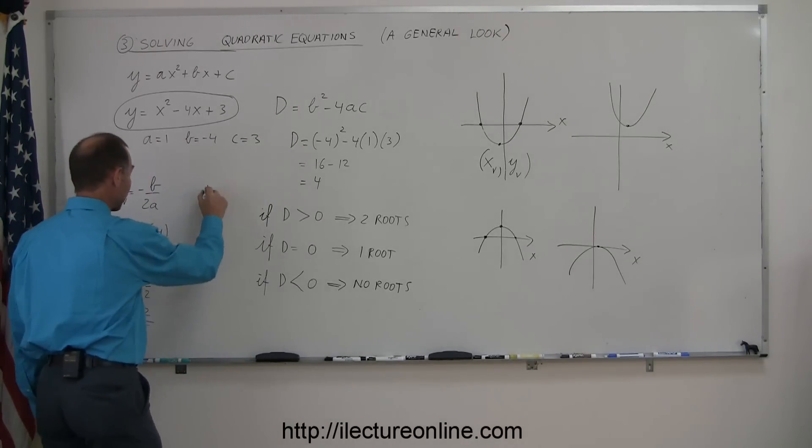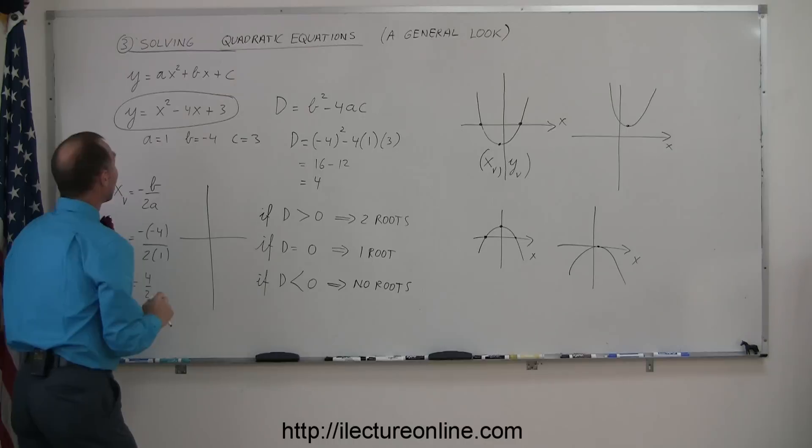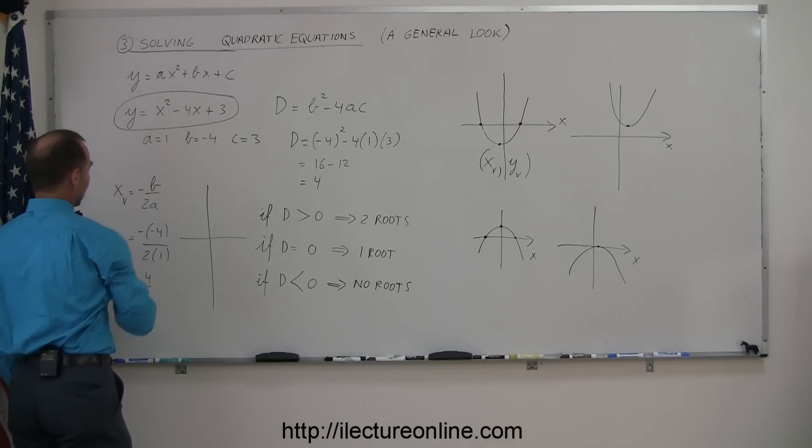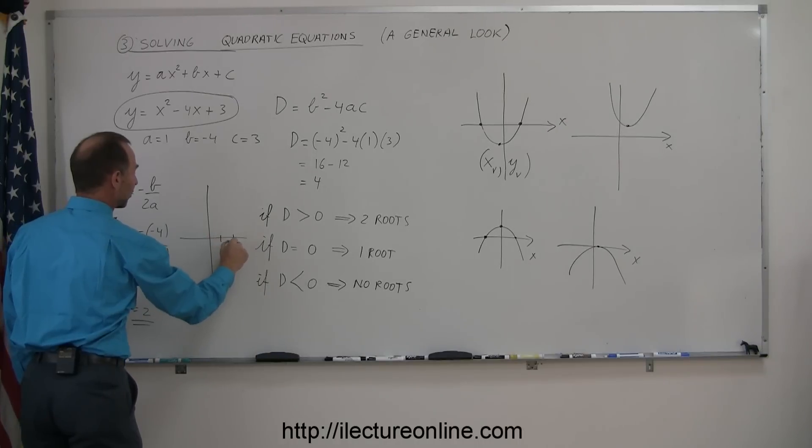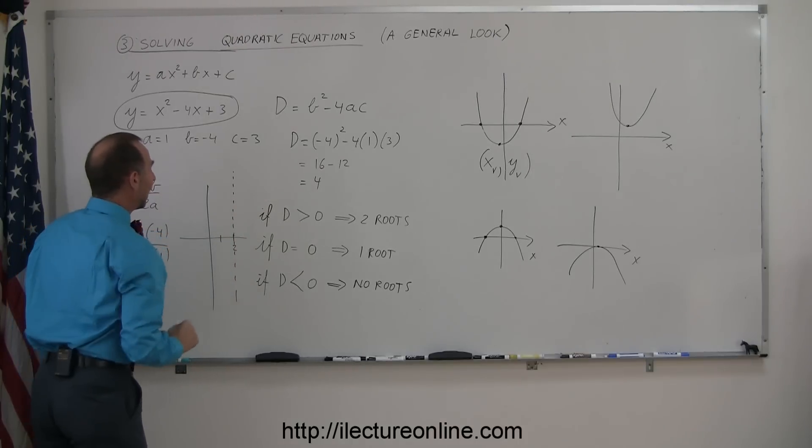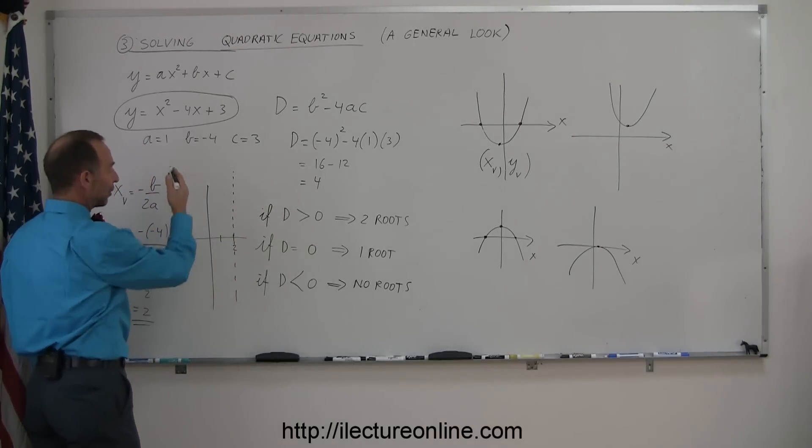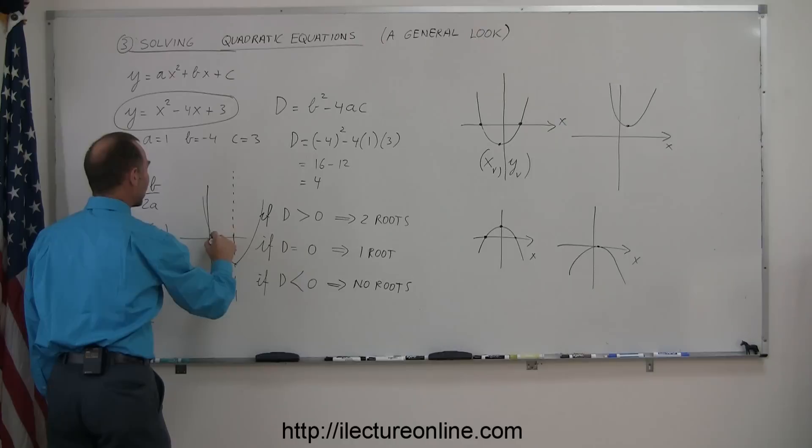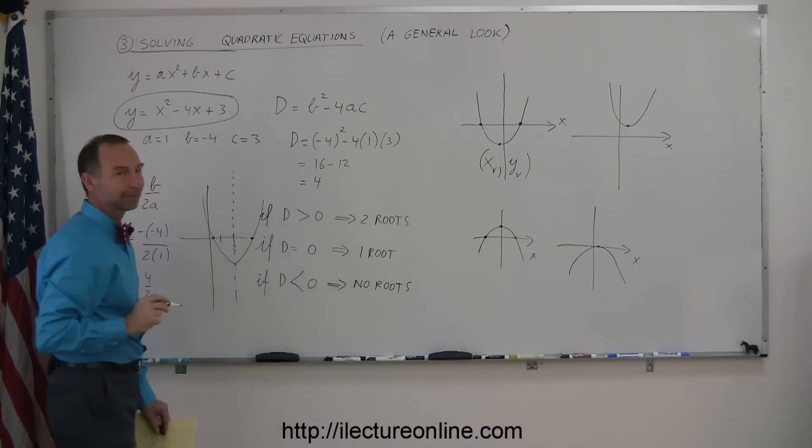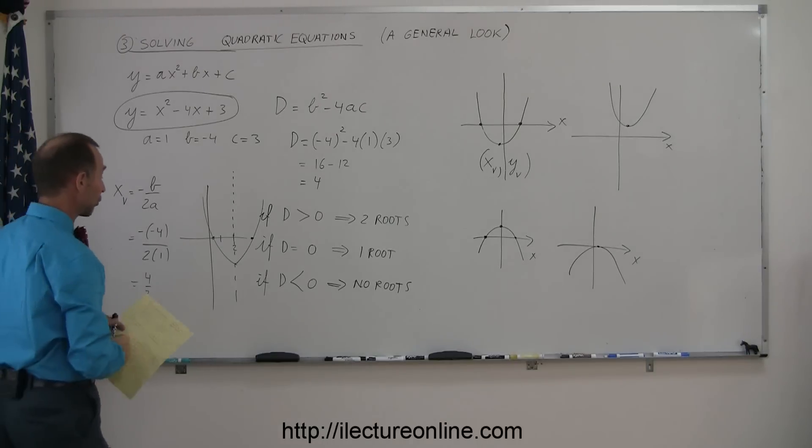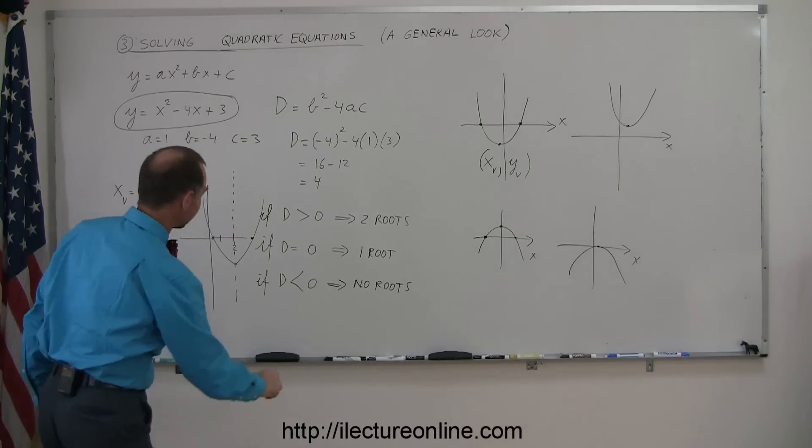And as an example, if I were to graph this, I know that it opens upward because my a is positive. I know that the axis of symmetry is at x equals 2, so I can draw a dashed line, and I know that I have two roots. I know that it opens upward, so I know that it probably looks something like this, with two roots like that. Okay, so now they have kind of a general, let's do some specific solutions for quadratic equations.